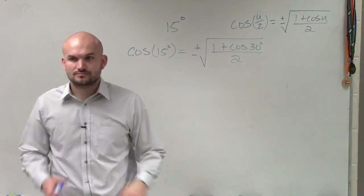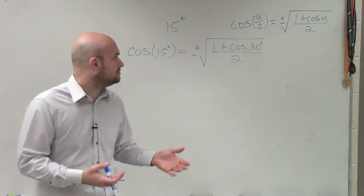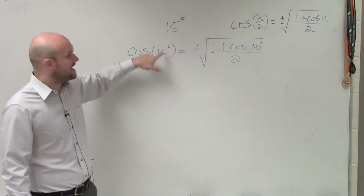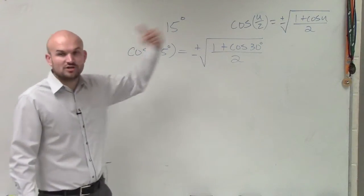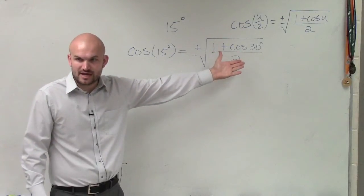So whatever angle we're getting, we just write it with u divided by 2 and not divided by 2. Well, this is that angle divided by 2. So you just multiply it by 2 to get your back to the actual angle we can evaluate for.